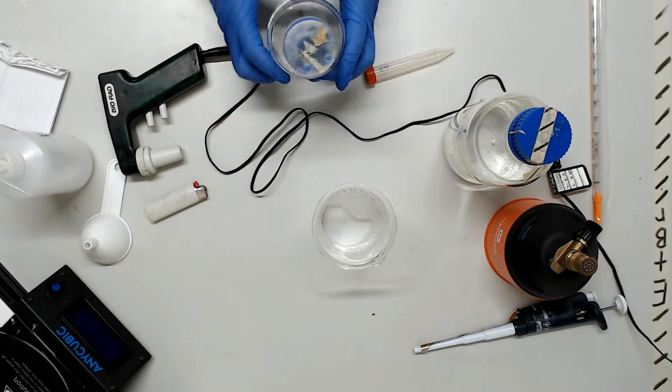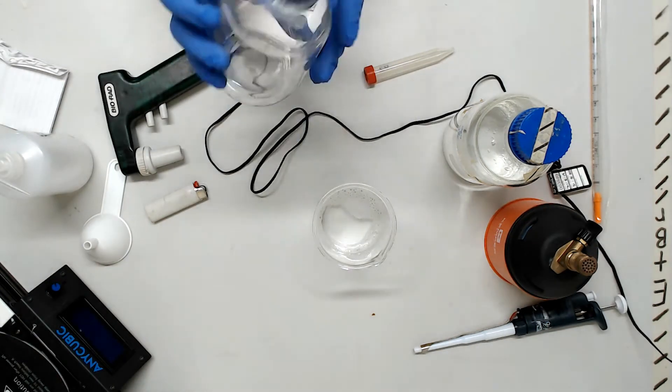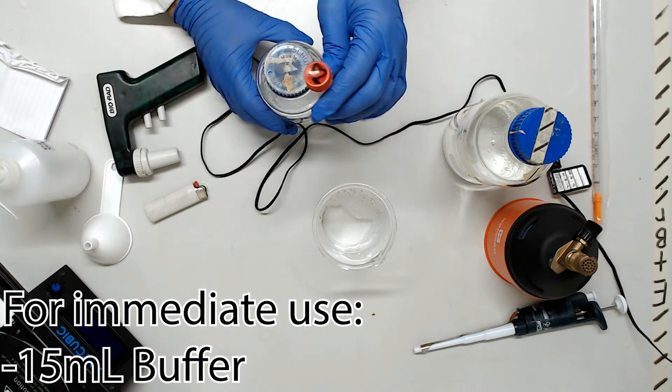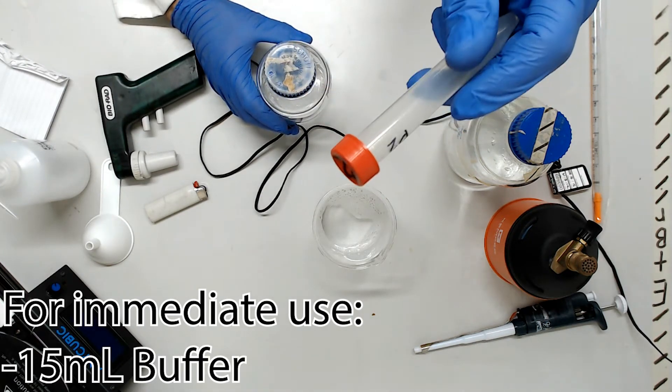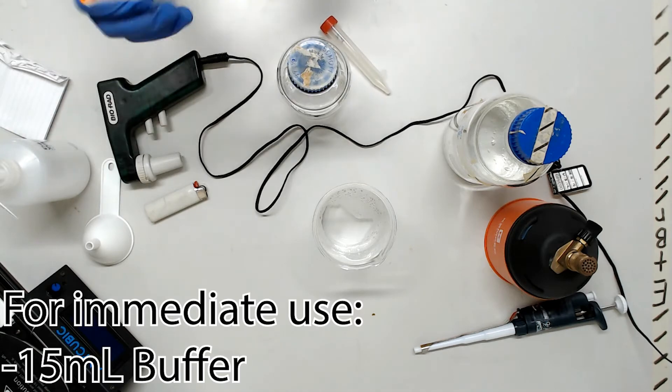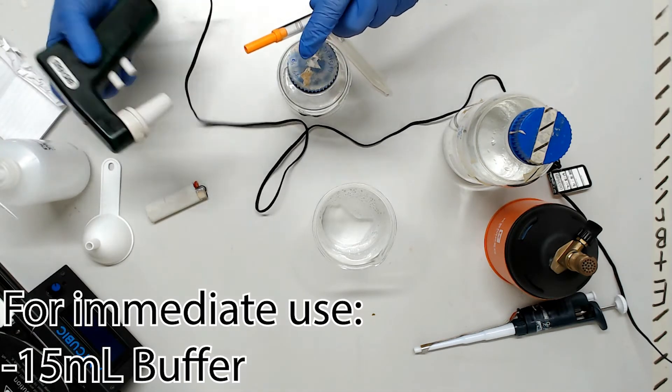Let the bubbles subside, then gently pour your fresh solution into a sterile bottle, not forgetting to add 15 mils to a labeled falcon tube for immediate use. The falcon can remain at room temp, but keep your stock solution bottle in the fridge.